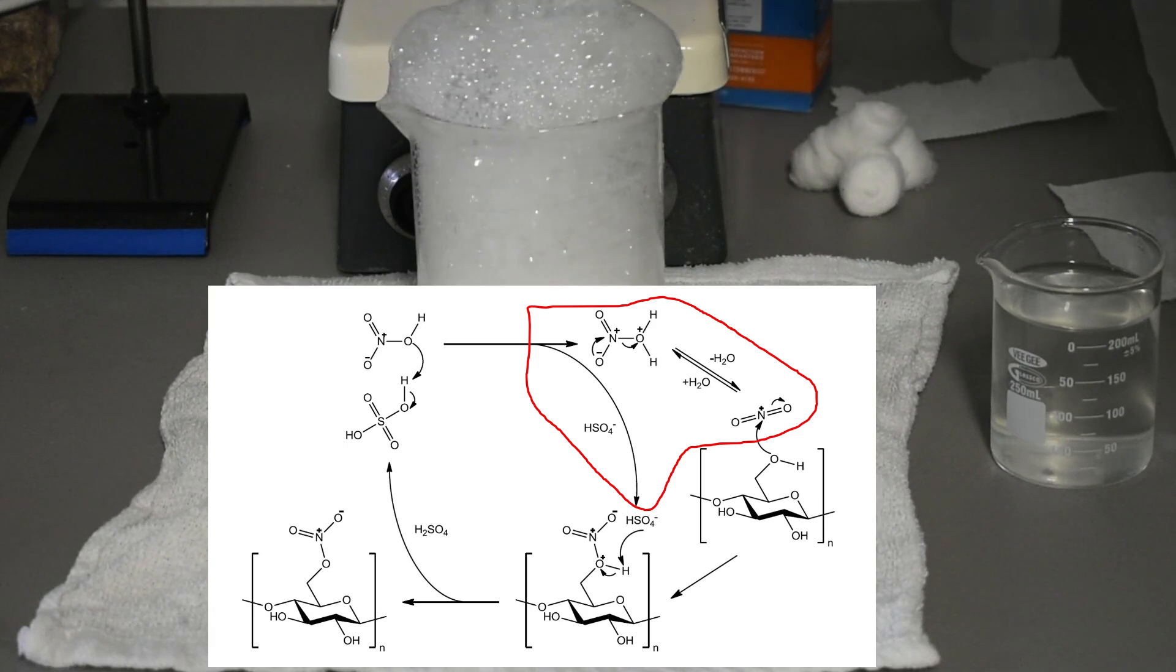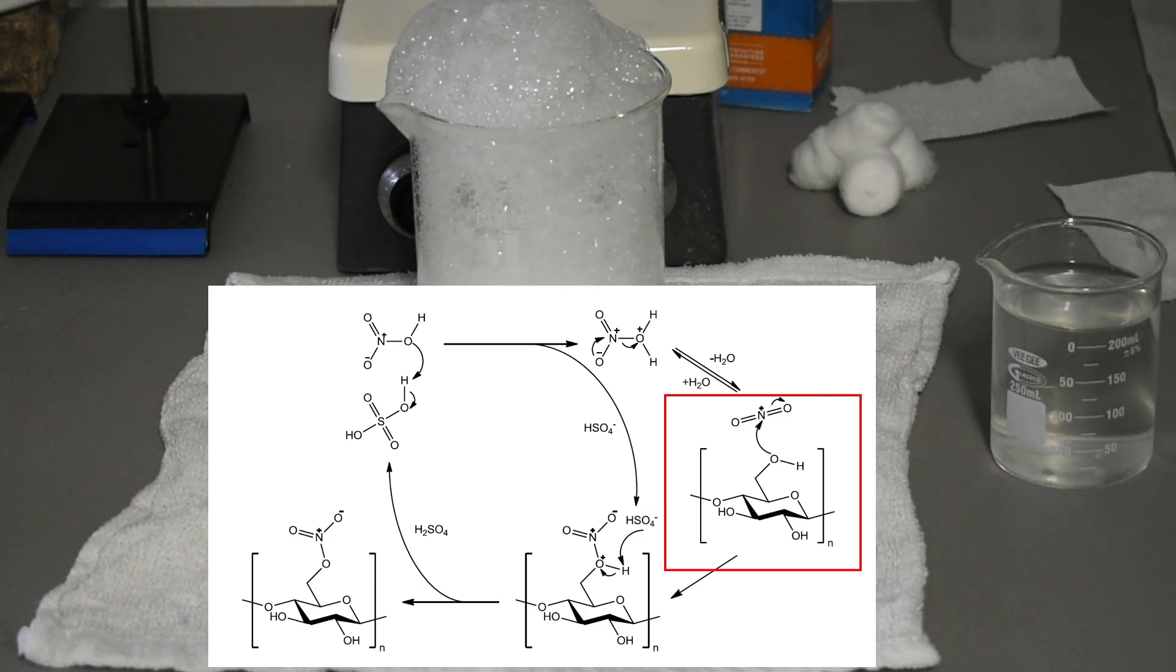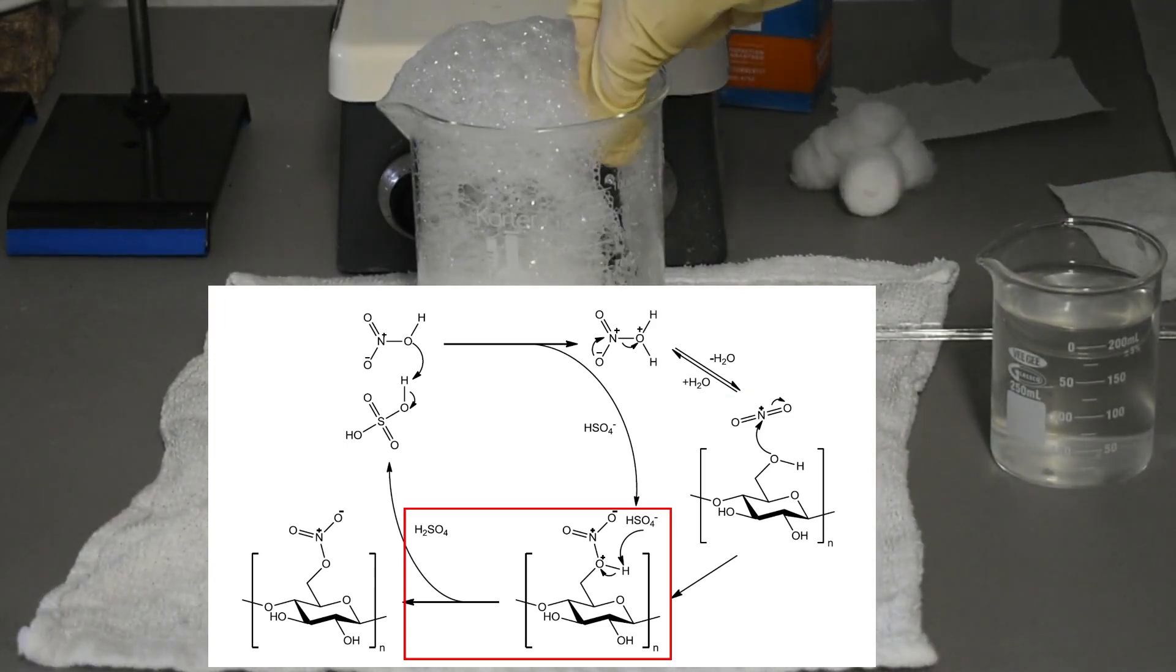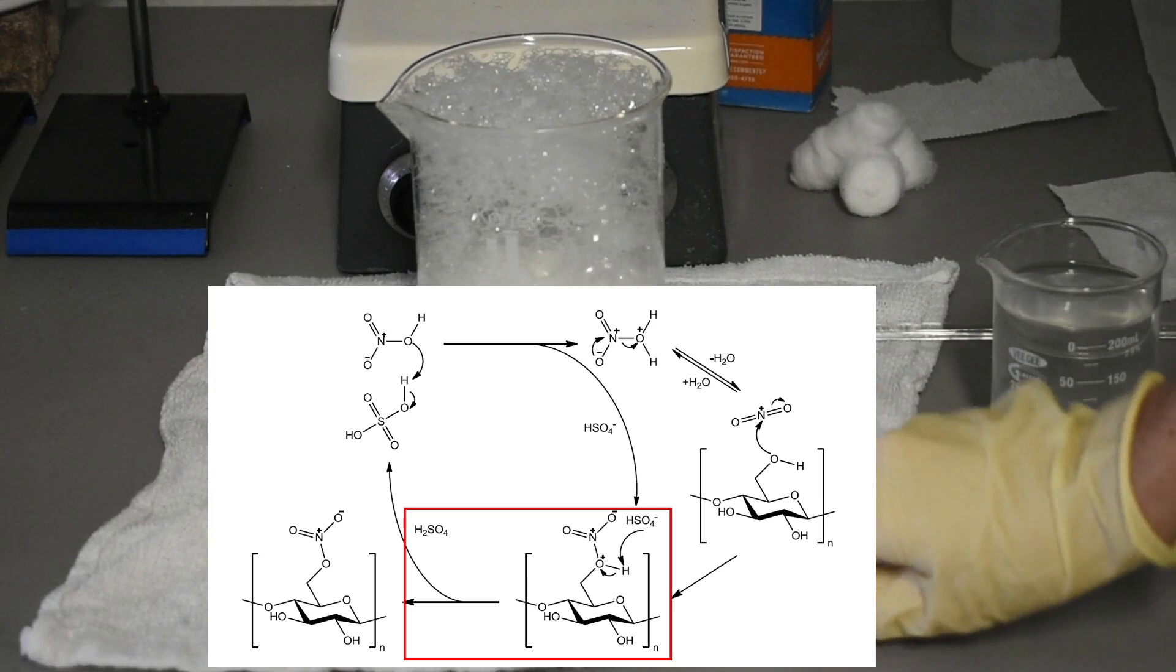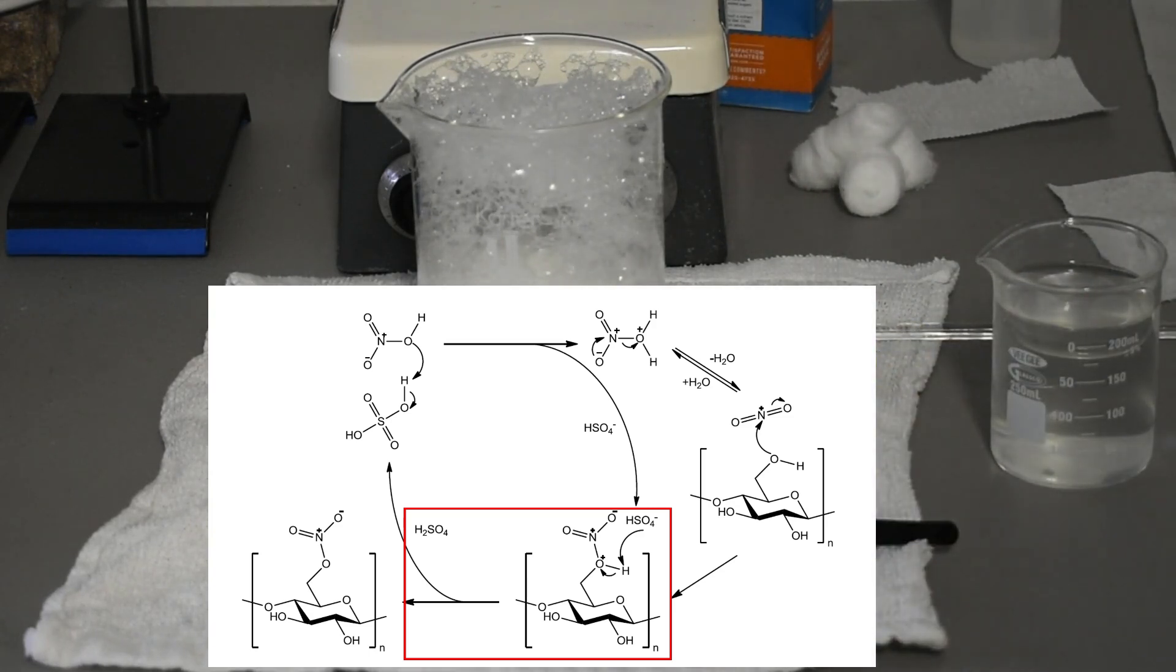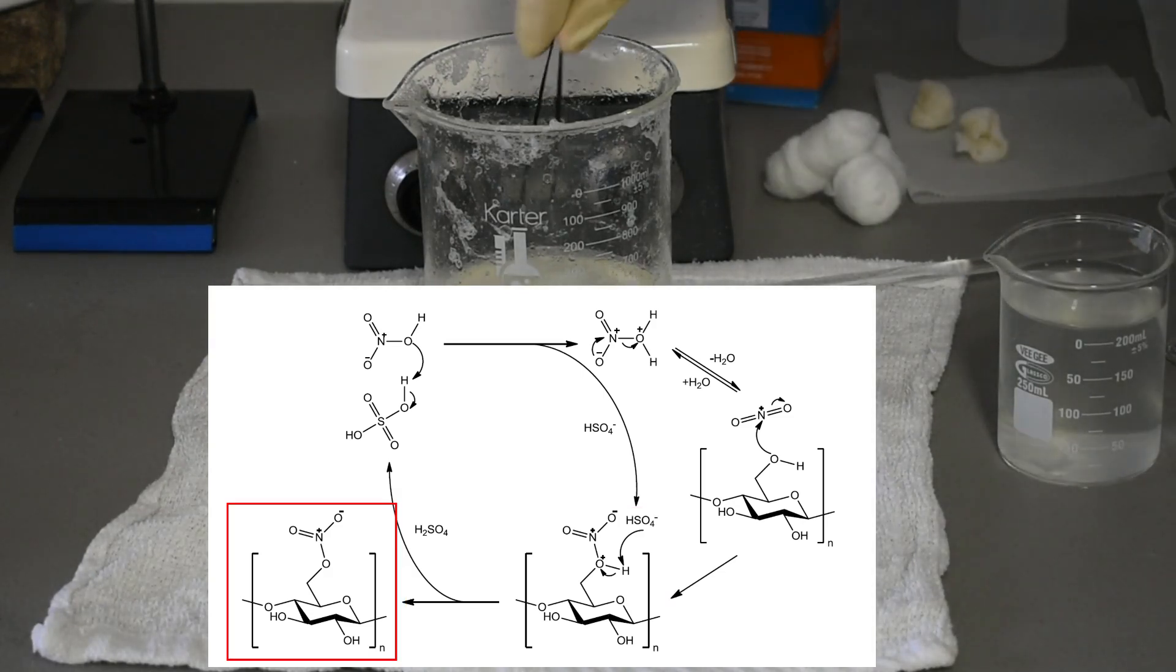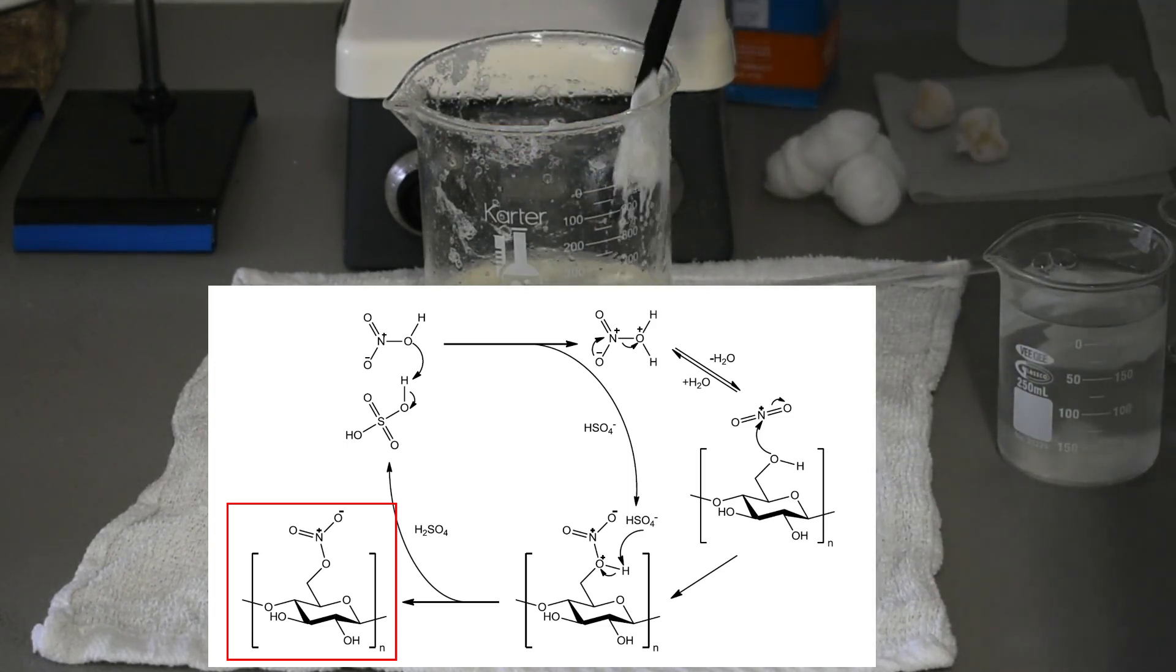And that NO2+ will react with the hydroxyl group on the cellulose. That oxygen will attack the positive nitrogen, and that will leave you with a nitrate group with an extra proton from the hydroxyl originally. The HSO4- anion can then attack that hydrogen there and reform the sulfuric acid, so the sulfuric acid is regenerated in this reaction. The result is your final product. At least in this case, it's mononitrocellulose, but you can also have the di- and tri- variants if either two or three of the hydroxyl groups are converted to nitrate groups.